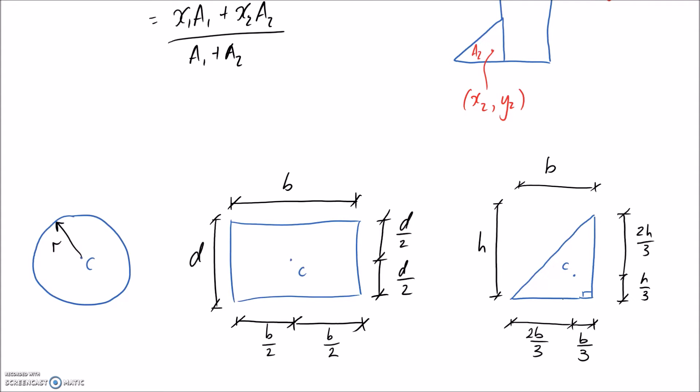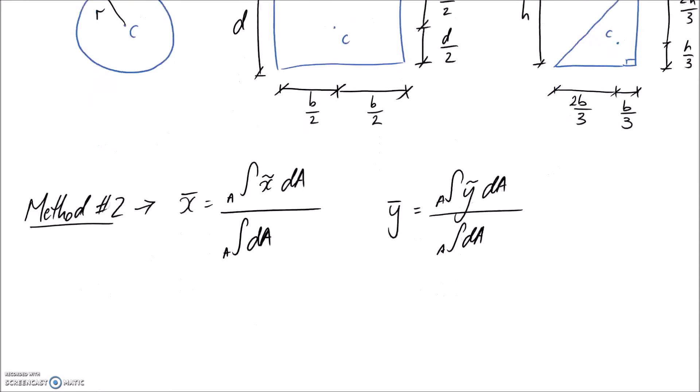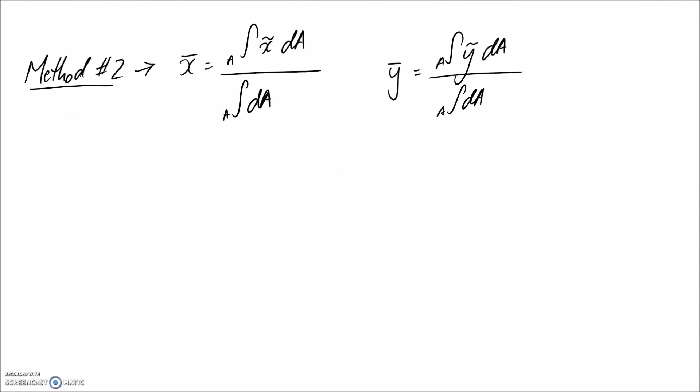So what happens though if you have something that's not quite so simple? So if we go down here, this is our second method that we're going to have a look at. Unfortunately, what happens is you need to go back to the integral definition of working out where the centroid lies.